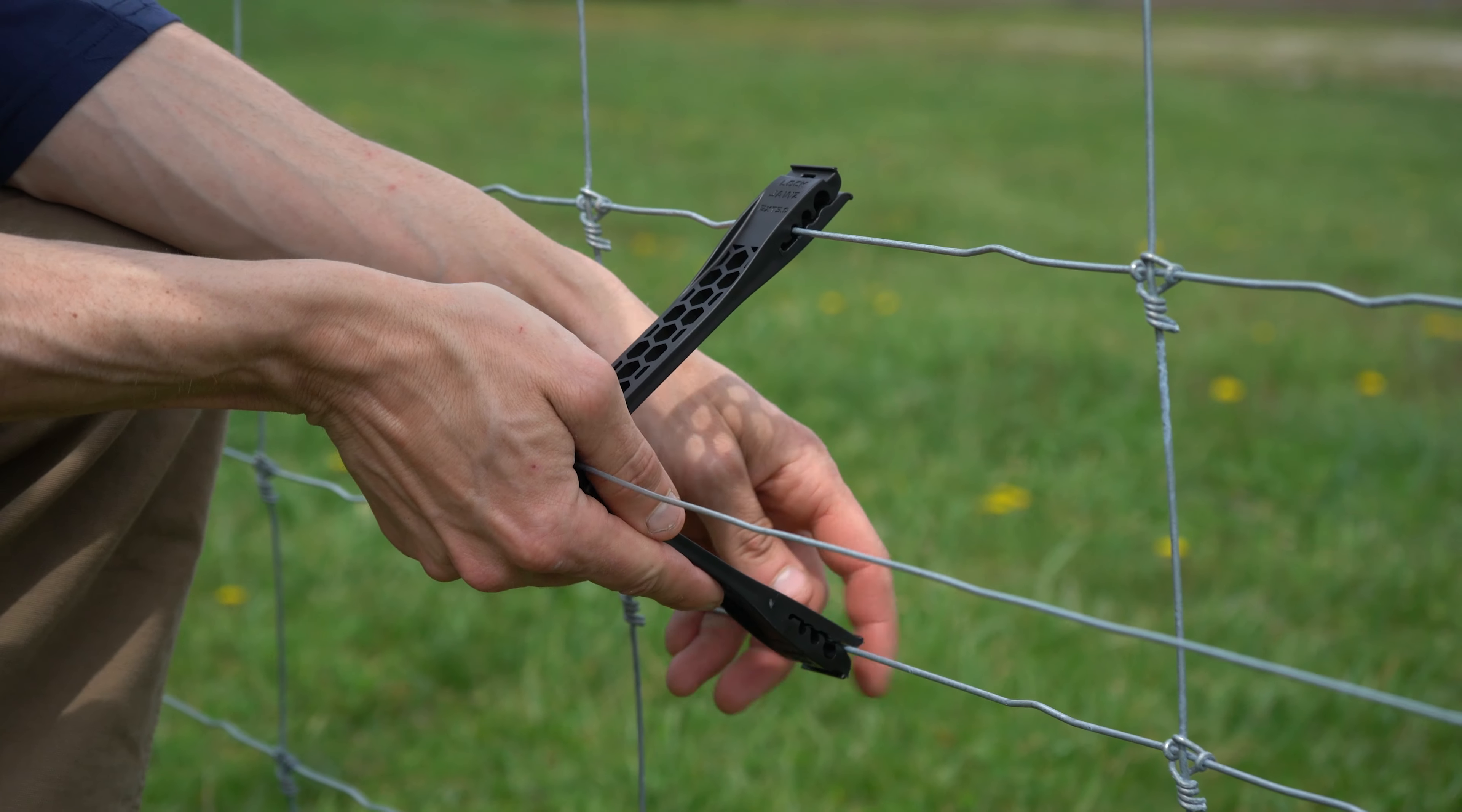To install these insulators, you'll want to connect them together right at the cloth, then insert the wire into the center of that cloth and close the angle. Now we can clip it onto the woven wire.